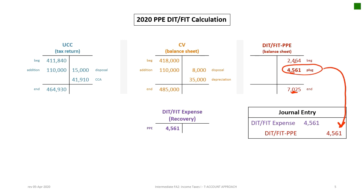To record the adjustment from a beginning deferred tax liability of $2,464 to an ending balance of $7,025, I need a credit to the deferred tax account of $4,561. Therefore, I debit the deferred income tax expense or recovery account for $4,561. Remember, expense accounts are closed out every year, so there is no beginning balance. The first item in the deferred income tax expense recovery account is $4,561.